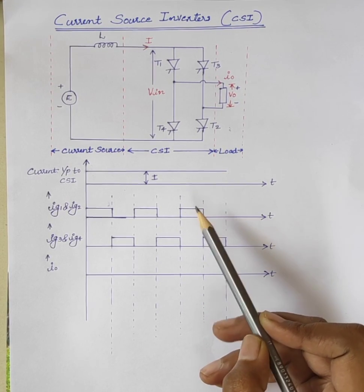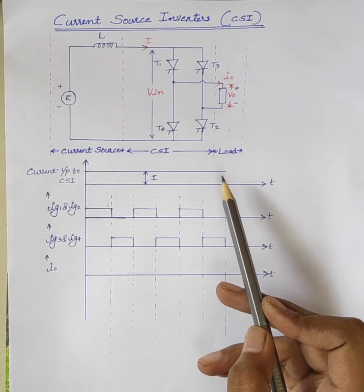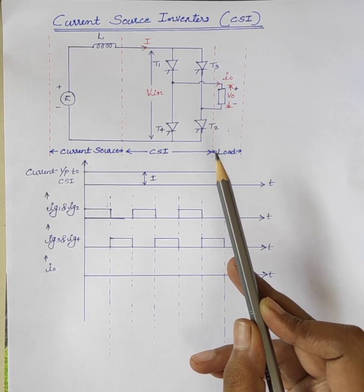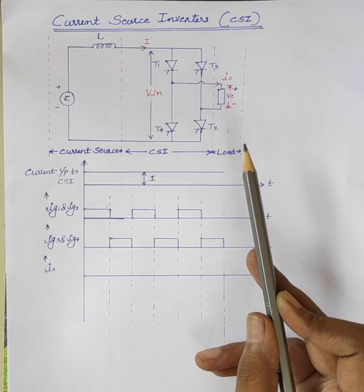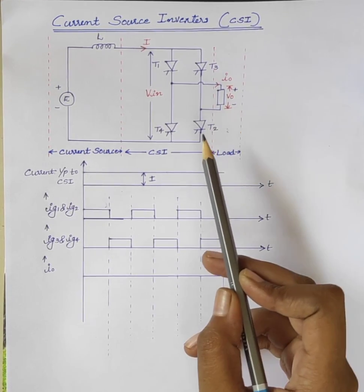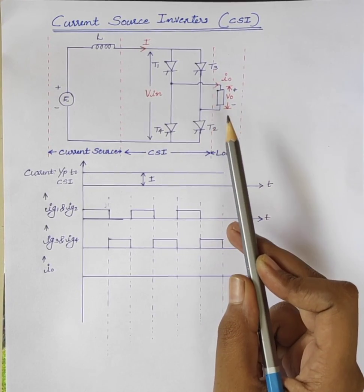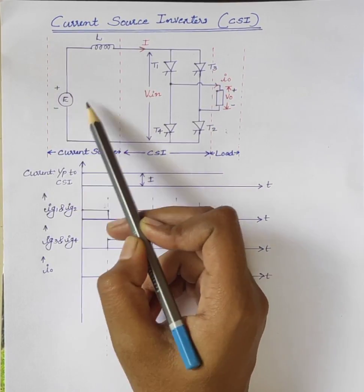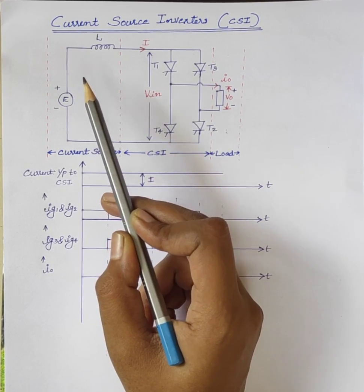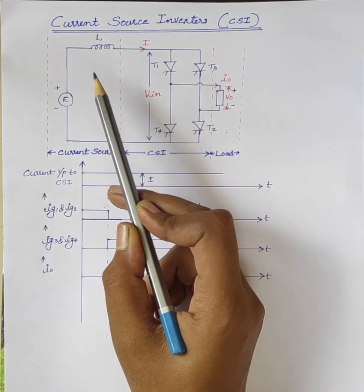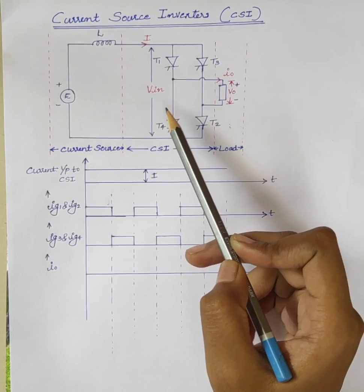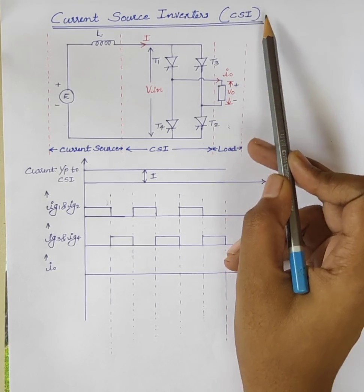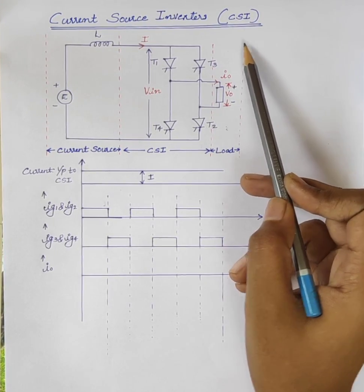Hello students. In the last classes we discussed about voltage source inverters. In voltage source inverter, input voltage is maintained as constant. Today we will discuss current source inverter.